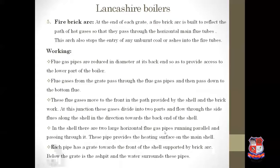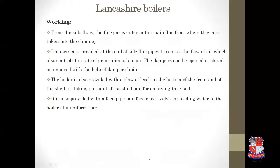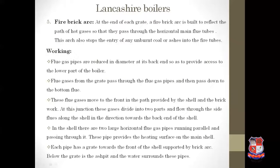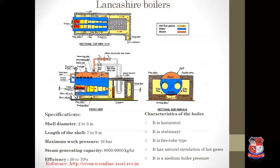In the shell, there are two large horizontal flue gas pipes running parallel through it, providing a heating surface. Each pipe has a grate towards the front end supported by brickwork, with an ash pit below the grate and water surrounding the pipes. From the side flues, the flue gases enter the main flue from where they are taken into the chimney and released into the atmosphere.